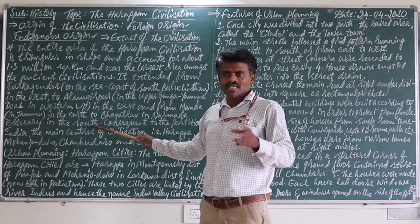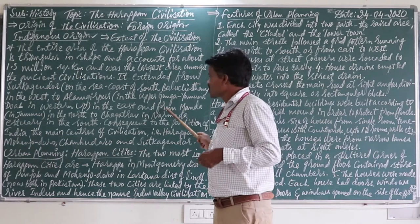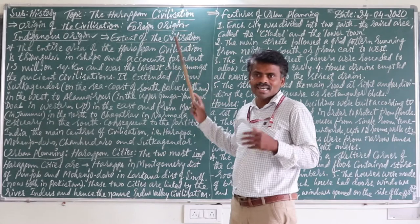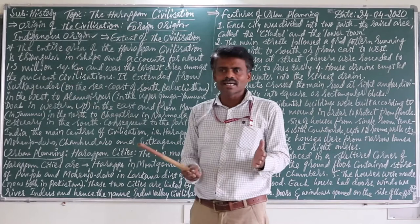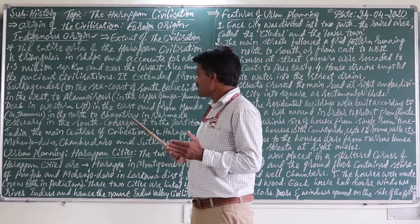That means four directions — north, south, east, west. You understood. This is the extent of the Harappan civilization. Extent means up to where. This 1.3 million square kilometers spreads in four directions. Now you have clarity about the extent.